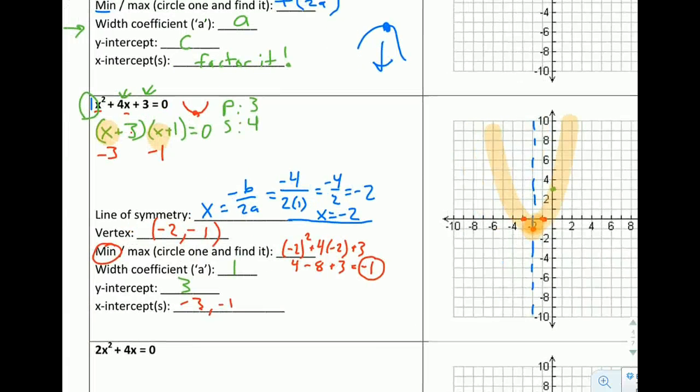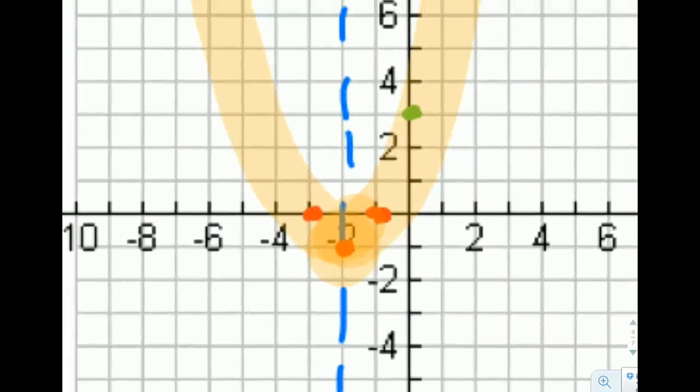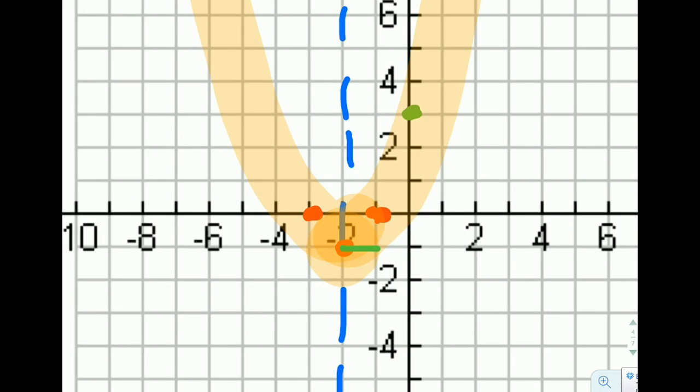Our width coefficient, our a value, is 1. So I know that if I'm starting here, I need to go over 1 and up 1. And in fact, I actually already have that because of my intercepts. I go backwards 1 and up 1 again because it's symmetrical. So that will work.